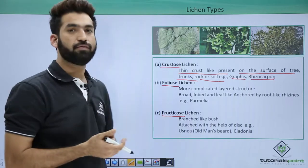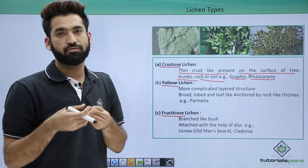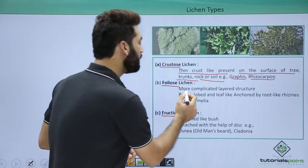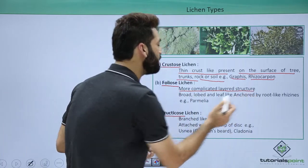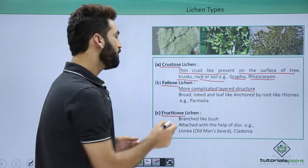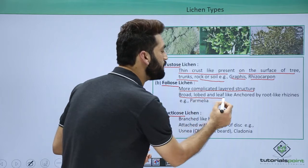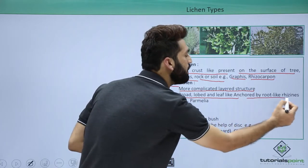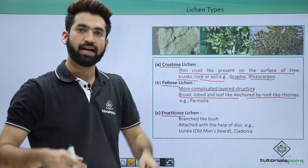When you talk about foliose, it forms a foliose-like structure, means leaf-like structure. They have a more complicated layer structure. They are in the form of broad, lobed and leaf-like structures which are anchored by root-like things called rhizines.